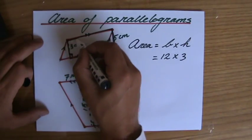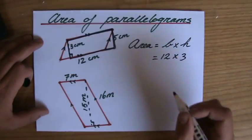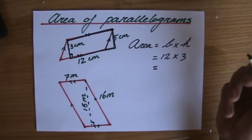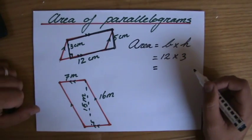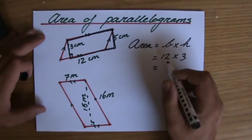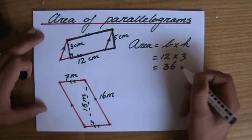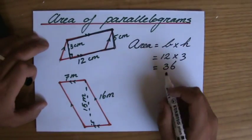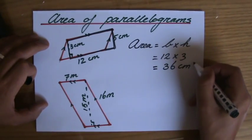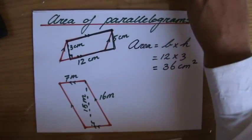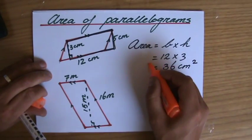3 times 12. That's why the area of a parallelogram is base times height, where the base and the height make an angle of 90 degrees. 36 centimeters squared. Area: centimeters squared. That is the answer to my first problem.